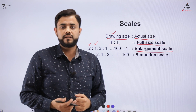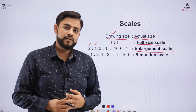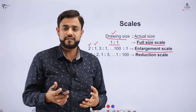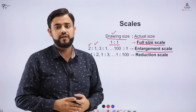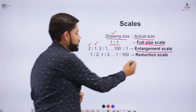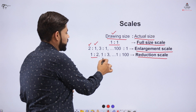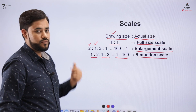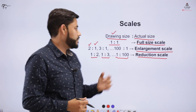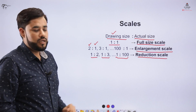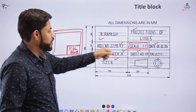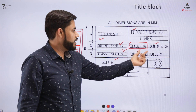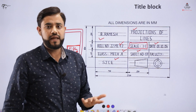In the civil construction industry the objects are large, so you need to reduce the scale to show them on a drawing — this is a reducing scale. It can be 1:2, 1:3, or 1:100. This means if the actual size is 2, you represent 1 on the drawing — half the dimension. In general practice we use full scale, so indicate 1:1; otherwise indicate the scale as per requirement.